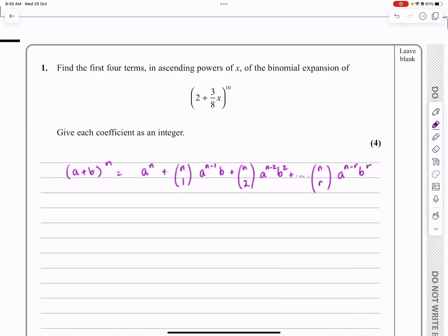So with this one, we've got 2 plus 3/8 X to the power of 10. And I actually just follow the same process through. I'm not substituting in here so much as just saying, well, it's 2 to the power of 10. It's then going to be 10C1, 2 to the 9, and 1 of whatever the bit adding on is, which in this case is 3/8 X plus 10C2, 2 to the 8, 3/8 X squared, and so on. And you just keep going through the number of terms that you need.